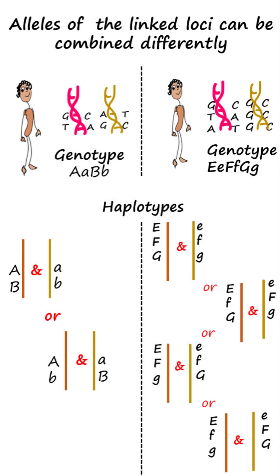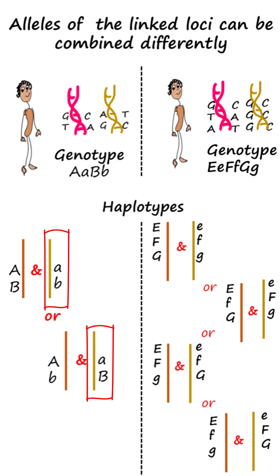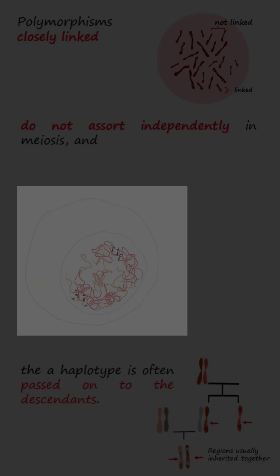Alleles can be combined differently. For instance, in the genotype big A small a big B small b, capital A could be linked to capital B or small b, and likewise for small a. So determining haplotypes includes determining the linkage phase of alleles.